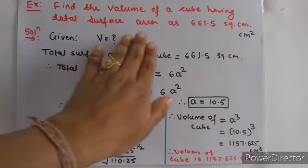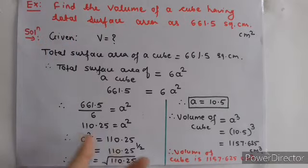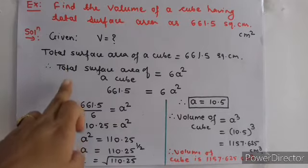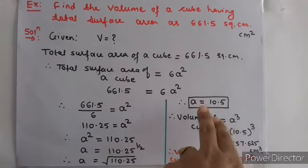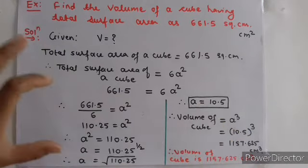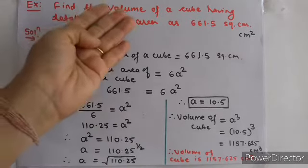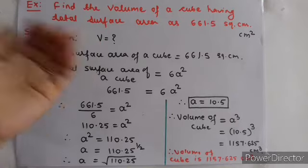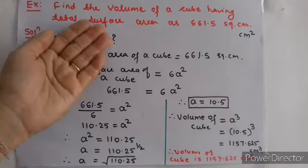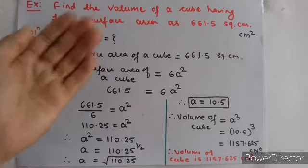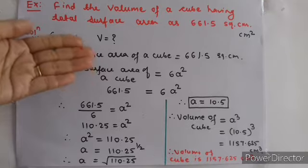So dear students, अगर हमें total surface area given है and volume find करना है, तो यह steps follow करनी पड़ेंगी: total surface area के formula से हमने a find कर लिया, and volume में वो a की value डाल दी — a यानि side of cube. तो हमें मिला volume of cube. इस तरह से आपको example solve करने हैं. हो सकता है आपको volume given रहे and area find करने के लिए कहा जाए — तो same process से जाना है, पहले volume का formula लगाएंगे, उससे a find करेंगे.